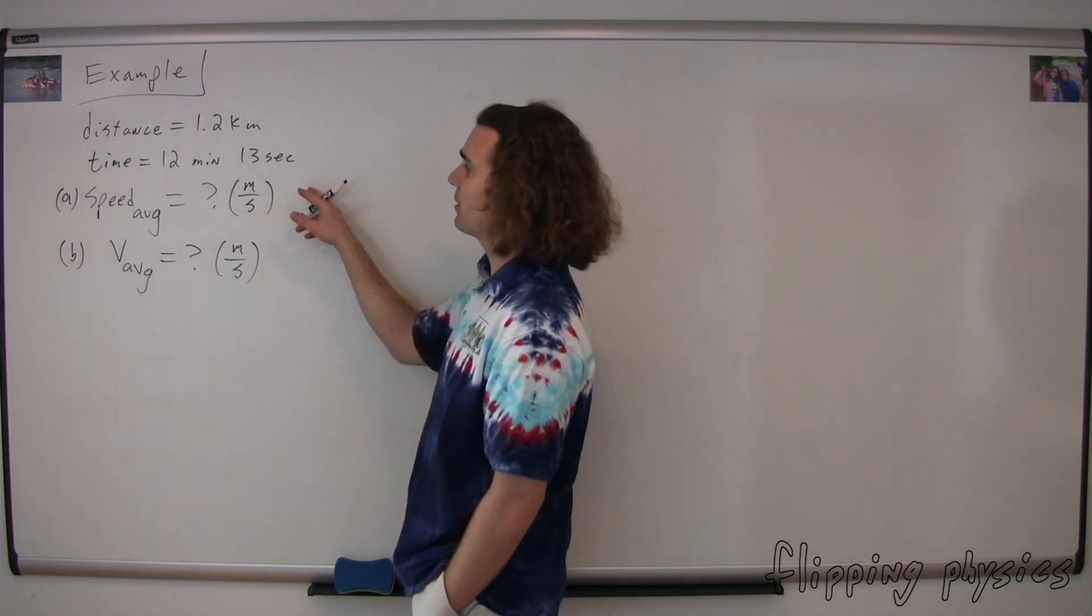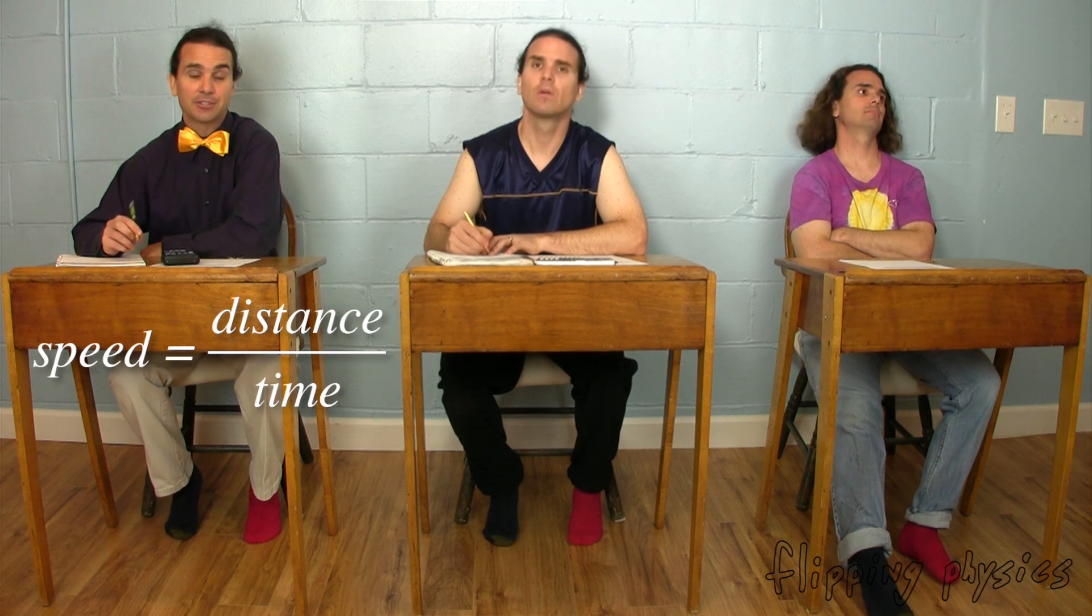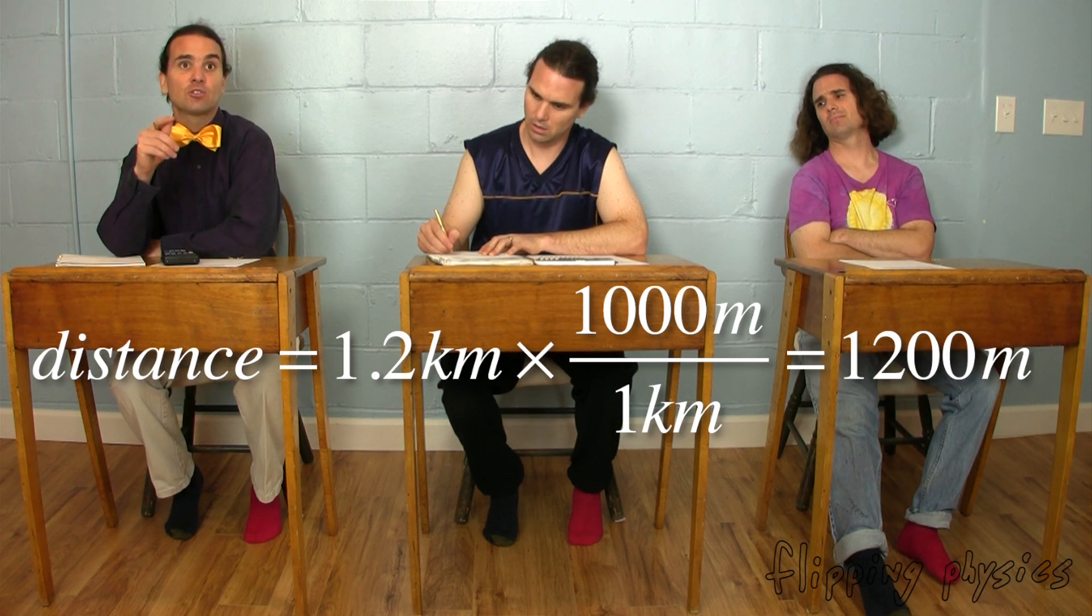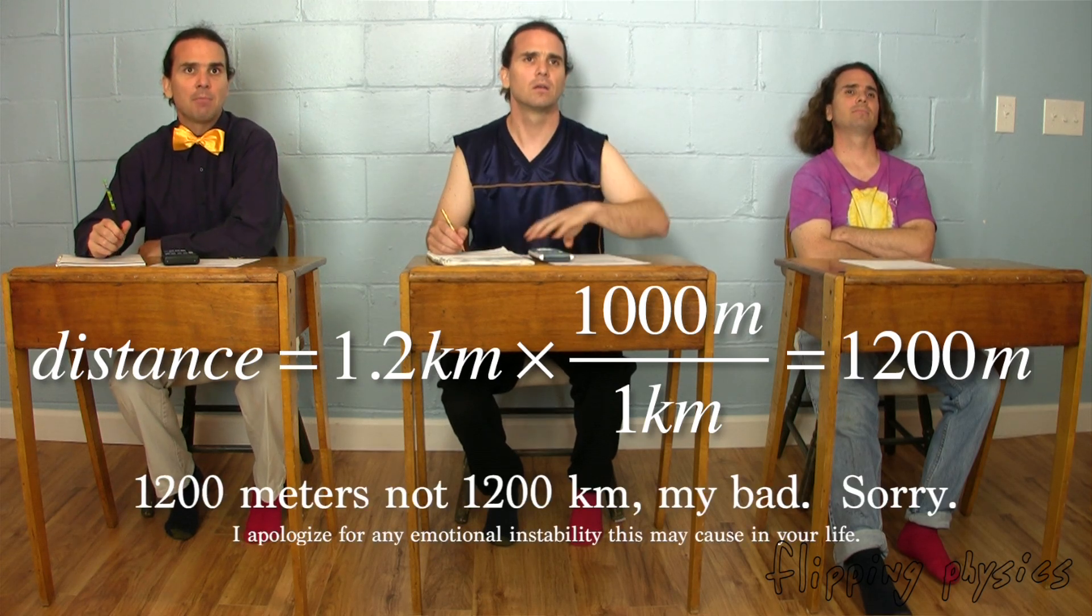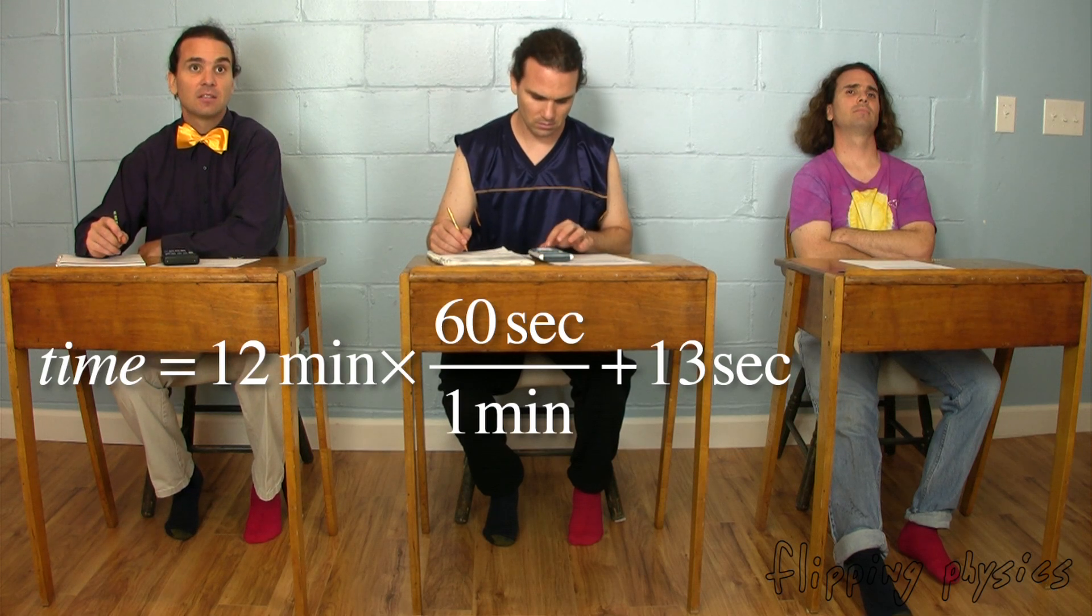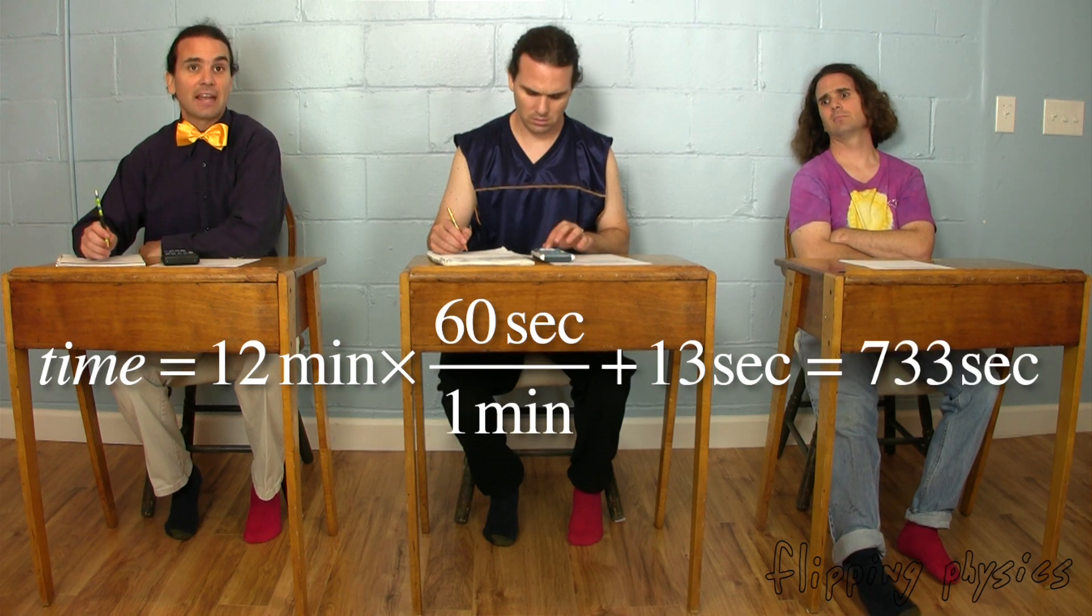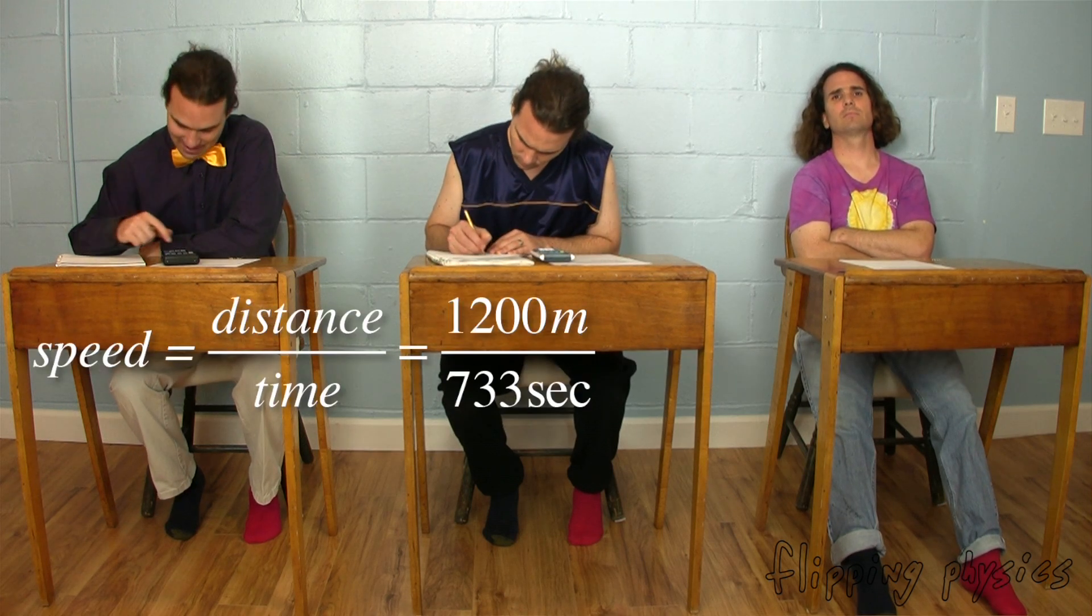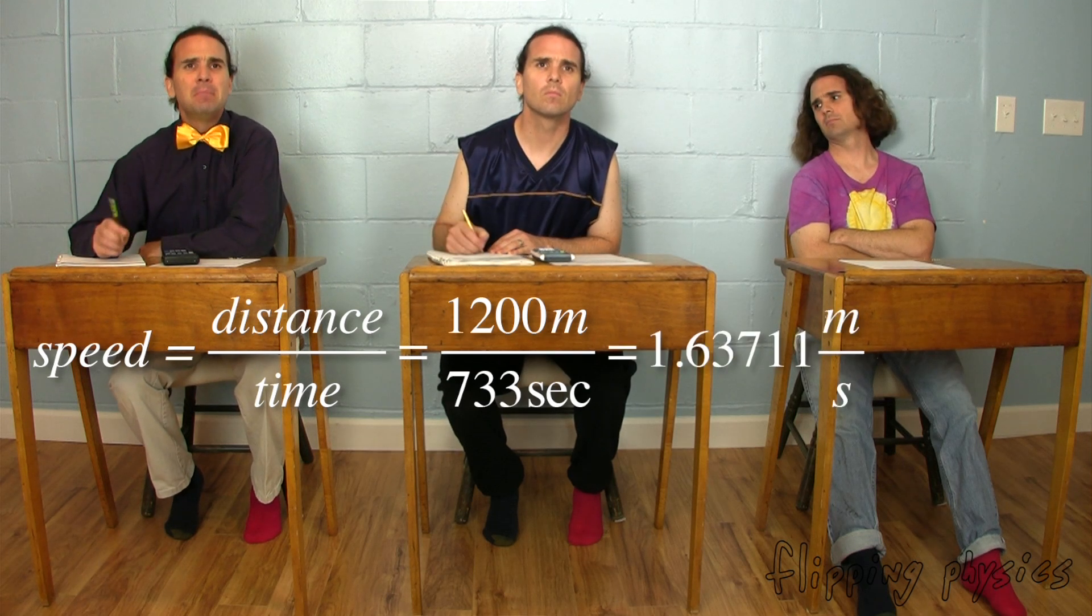Billy, please solve part A. Well, speed equals distance over time, so we can write out that equation. But we should convert to meters and seconds first. So multiply the distance by 1,000 meters over 1 kilometer to get the distance in meters, which works out to be 1,200 meters. And multiply the 12 minutes by 60 seconds over 1 minute and add the 13 seconds to that and you get 733 seconds for the time. Then we can substitute those numbers back into our equation for speed and we get 1.63711 meters per second.